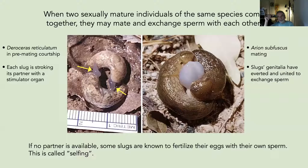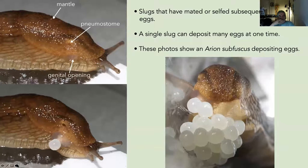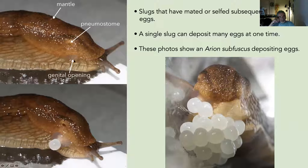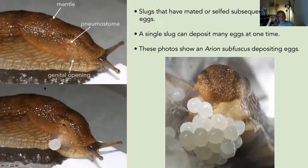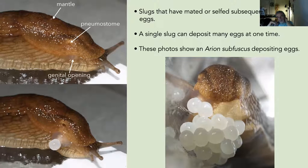After mating, slugs produce eggs. Here is Arion subfuscus — the genital opening becomes more pronounced when they're getting ready to lay eggs, and here is an egg coming out. A single slug can produce many, many eggs.